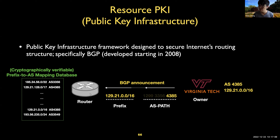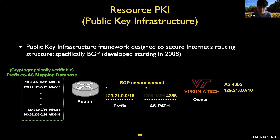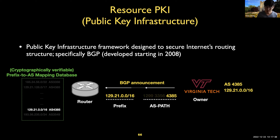Sometimes BGP is called a breadcrumb protocol, because like in a fairy tale, breadcrumbs mark the path followed so that they can be traced back to the destination. Once a router receives a BGP announcement, it checks whether the prefix and the origin pair is in the database. If the IP prefix and origin AS 4385 are in the database, it can accept this BGP announcement.